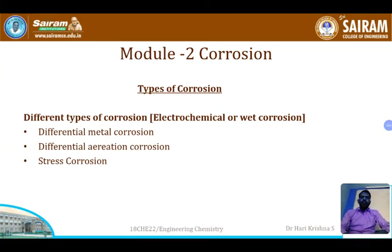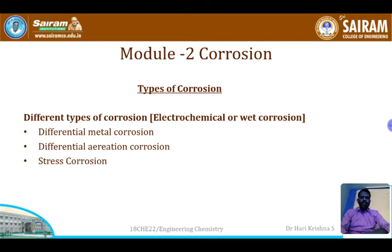Good morning. In the previous session we discussed corrosion — what is corrosion, types of corrosion, and the electrochemical theory of corrosion. There we saw what is wet corrosion. Wet corrosion is broadly classified into differential metal corrosion, differential aeration corrosion, and stress corrosion. Now let us discuss each of these one by one.